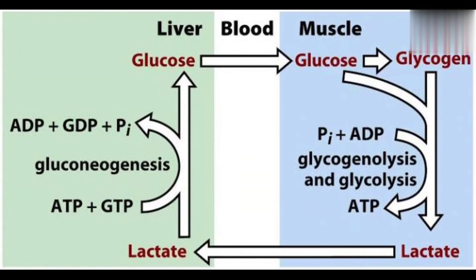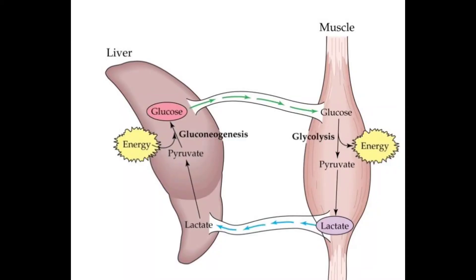In simple words, in the Cori cycle, lactate produced by the muscles is converted into glucose by the liver and fed back to the muscles.